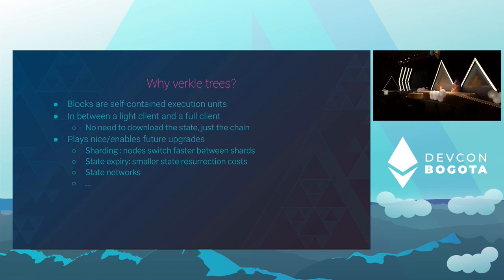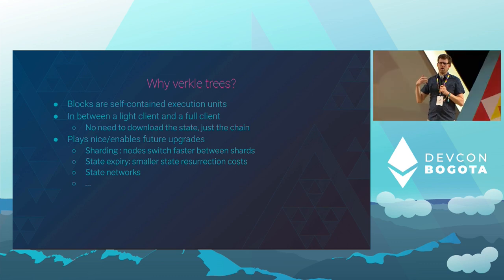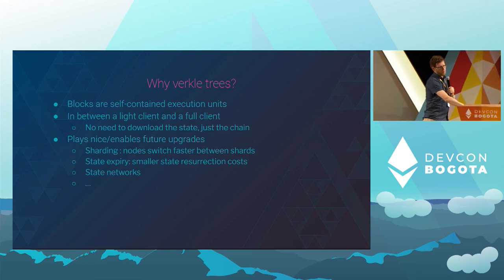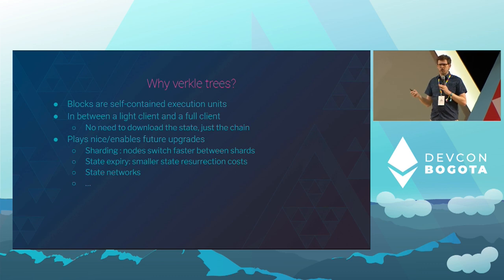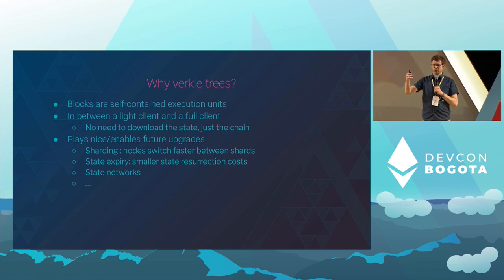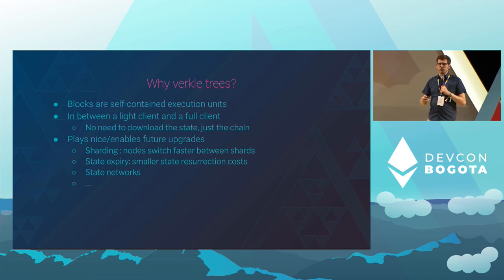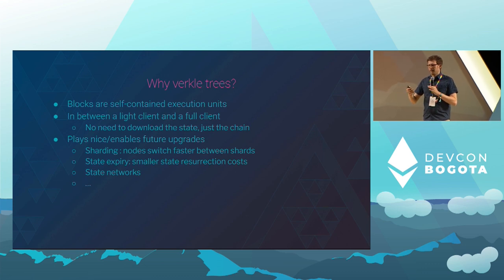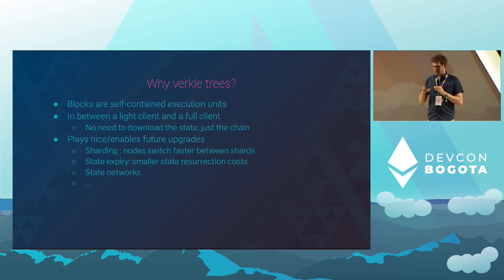It's something that is in between a full node and a light client — you still follow blocks, but you don't have to hold the entire state. This paves the way for other upgrades, for example shuffling committees between shards in the future. And of course there's the idea of state expiry — the state of Ethereum is quite large. We want to be able to delete some state, but not forget it forever. If your state has been deleted but you want to use it again, you need to provide a proof to resurrect it. Verkle Trees make your proofs smaller, so it will be cheaper to resurrect state.